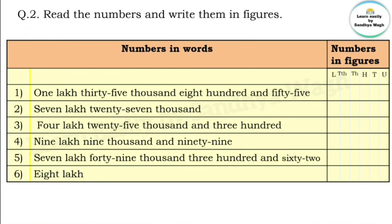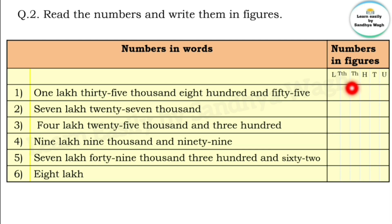Question two: read the numbers and write them in figures. We have the number in words and we need to write it in figures. Let's set up the place value table with units, tens, hundreds, thousands, ten-thousands, and lakhs. The first number given is one lakh thirty five thousand eight hundred and fifty five. Lakhs: one, so write 1 in the lakhs place.